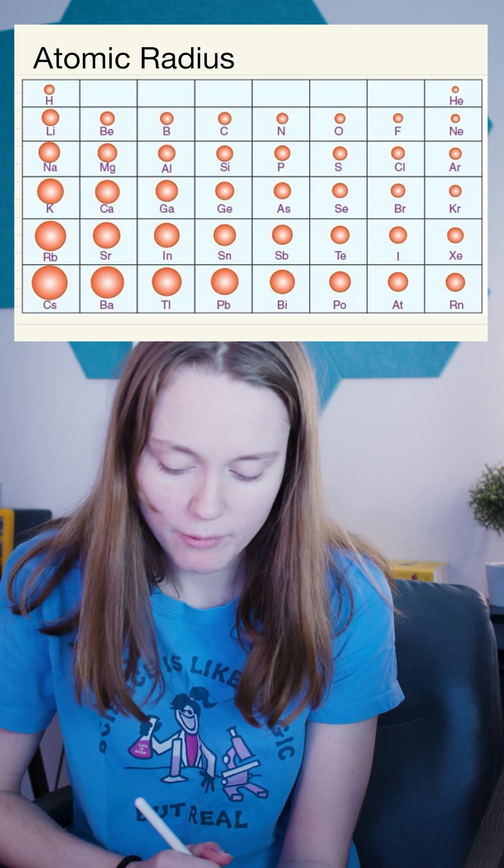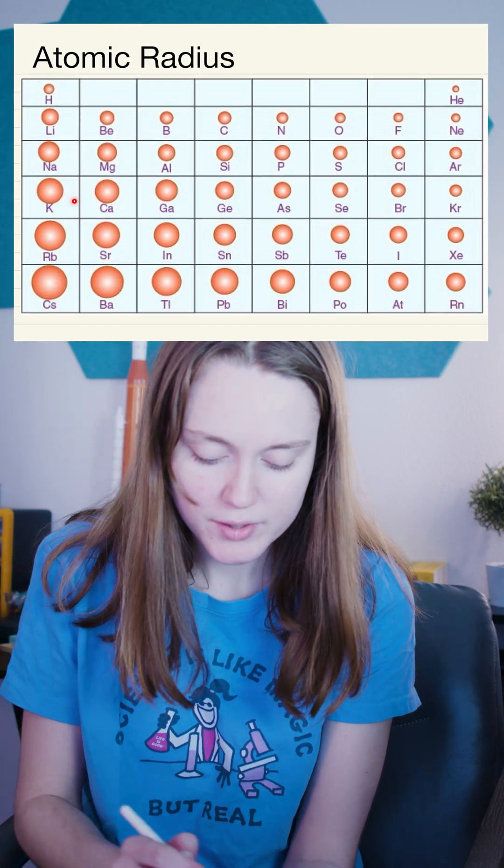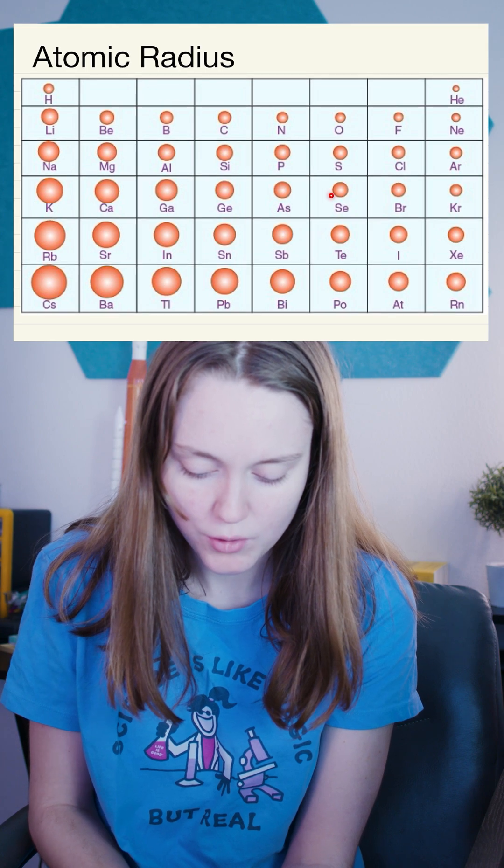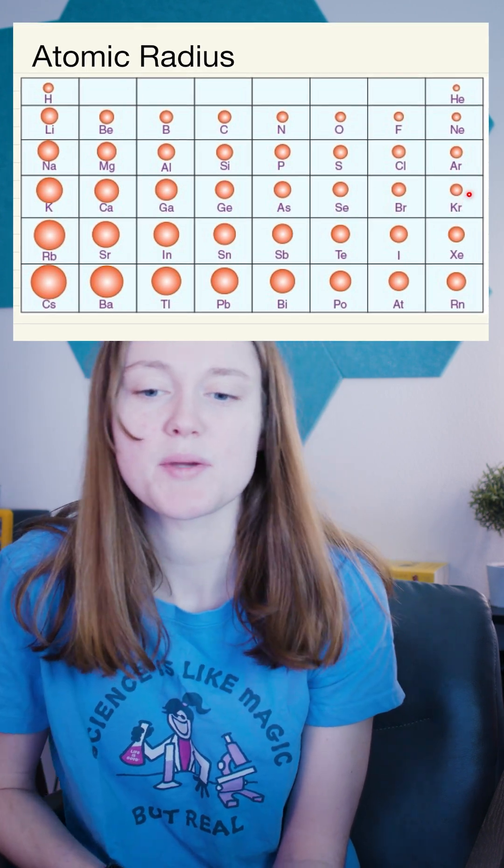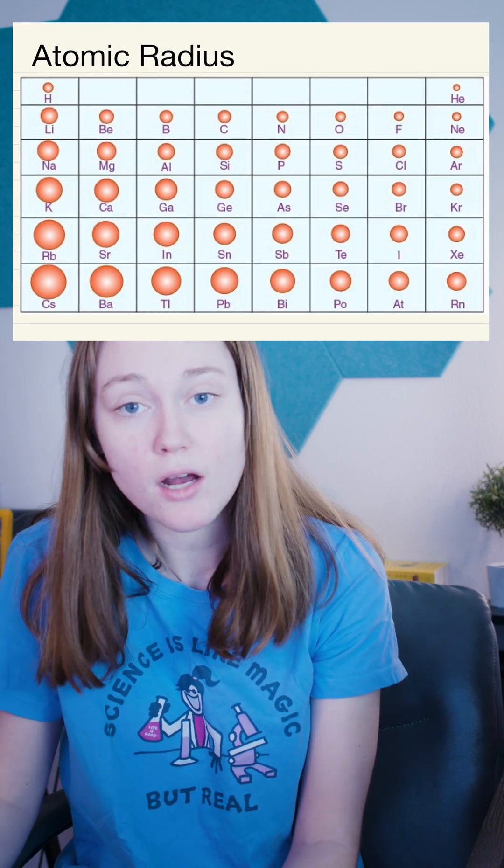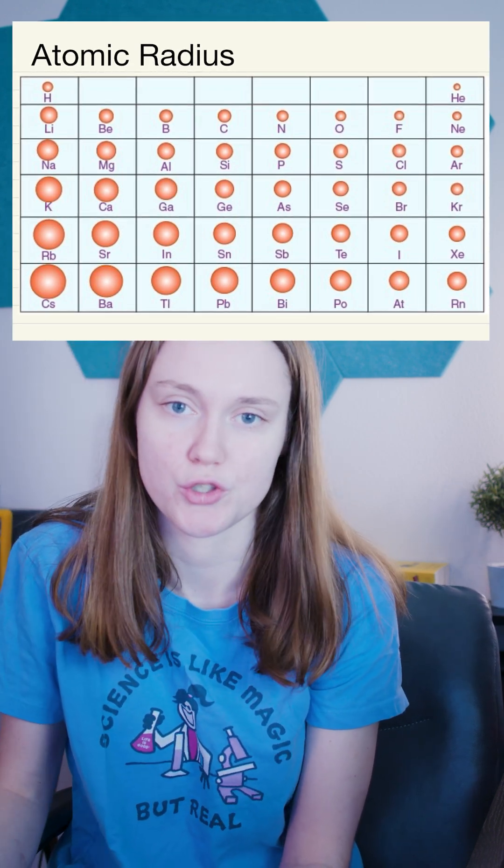So you can see here I've got our periodic table and it is going by atomic radius. As you're moving across a period, these atoms are going to shrink and that is because they have more protons and those protons are pulling those electrons closer to your nucleus.